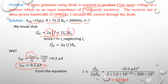Now we find the current I by rearranging: I = I_sn² / (2q × B_N). Substituting I_sn = 0.2 microamps, q = 1.6 × 10⁻¹⁹, and B_N = 200 × 10³ Hz, after simplification we get I = 625 milliamps. Therefore, 625 milliamps is the current through the diode.